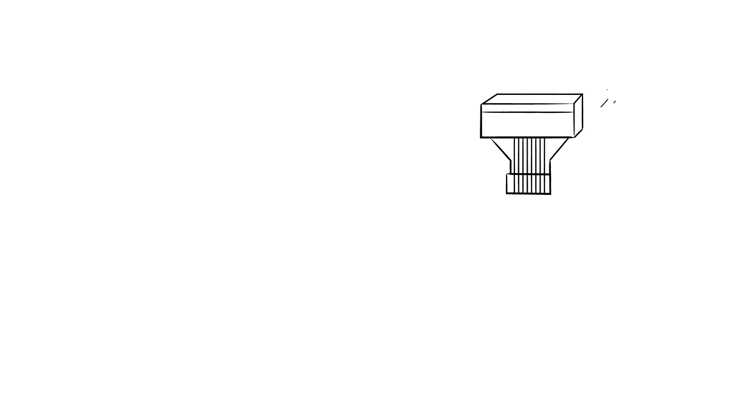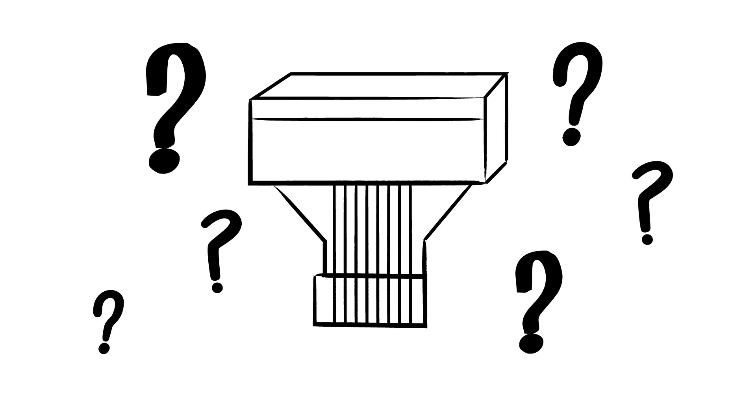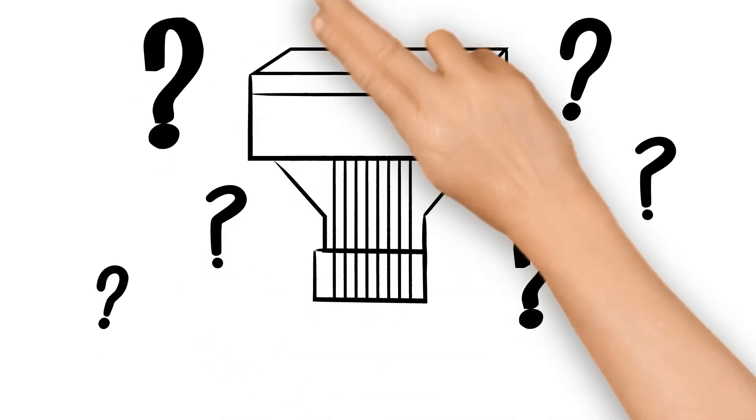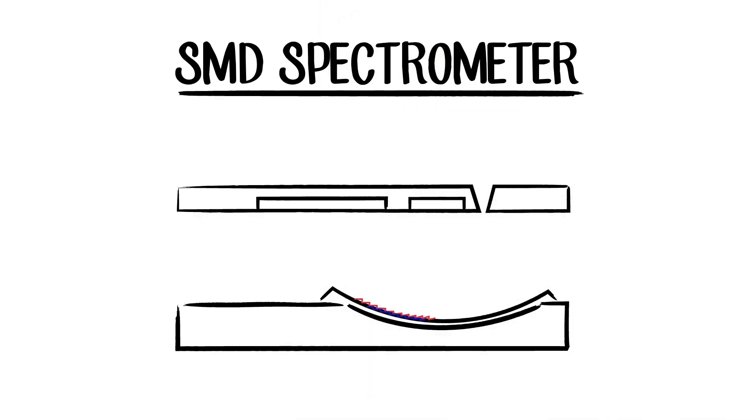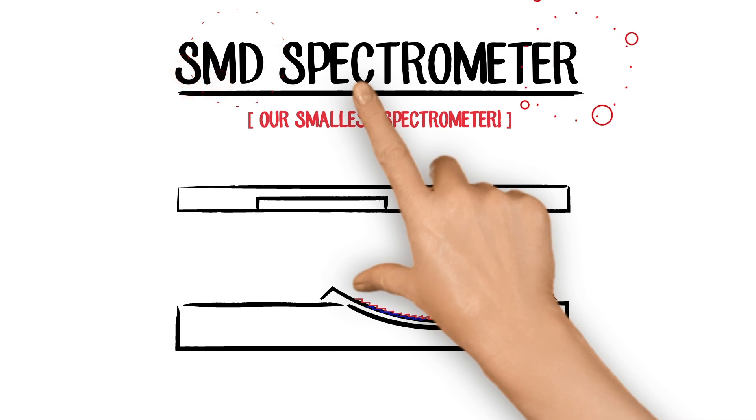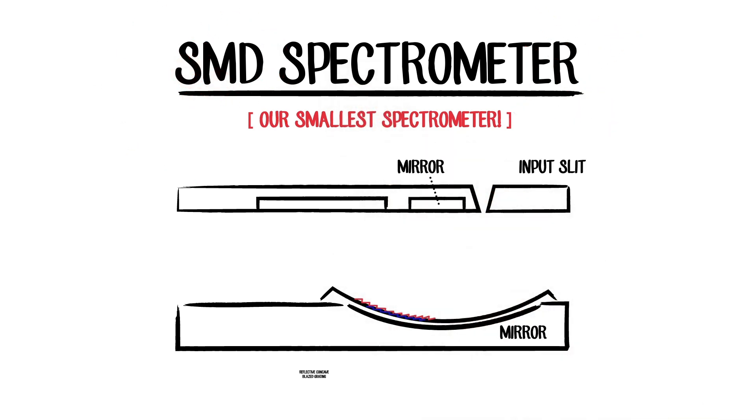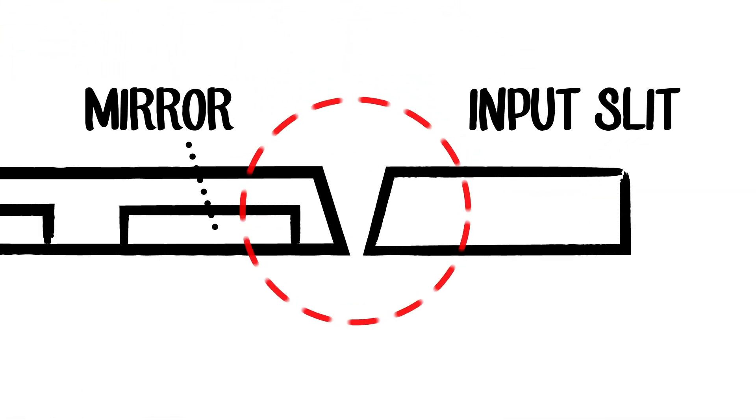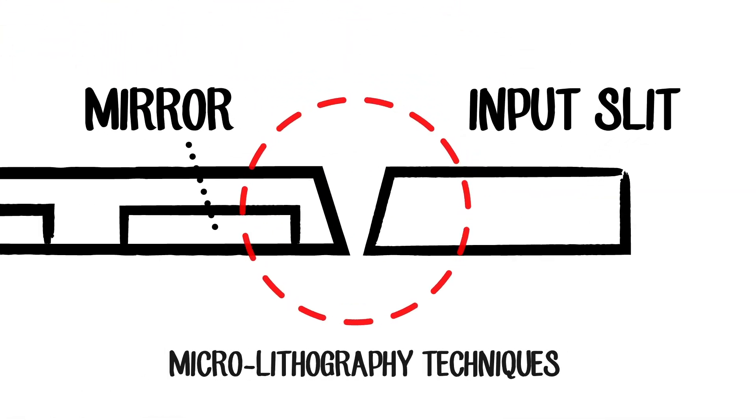So how do these extremely compact spectrometers compare to their larger predecessors? Similar to a typical spectrometer, our smallest spectrometer, the Surface Mount Detector or SMD spectrometer, contains an input slit, grating, and image sensor. What's cool is that the entrance slit is etched onto the CMOS image sensor using micro-lithography techniques.